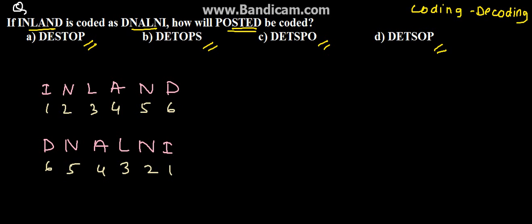Similarly we need to find the code for P-O-S-T-E-D, POSTED. So here if POSTED is numbered as 1, 2, 3, 4, 5, 6.